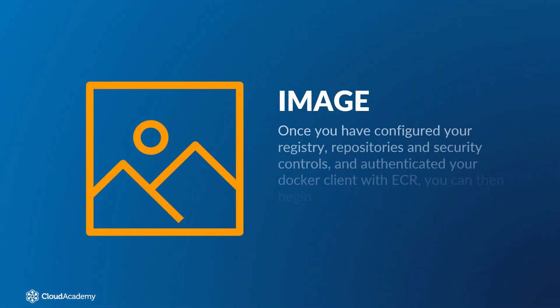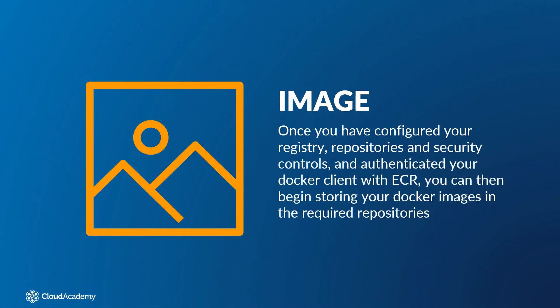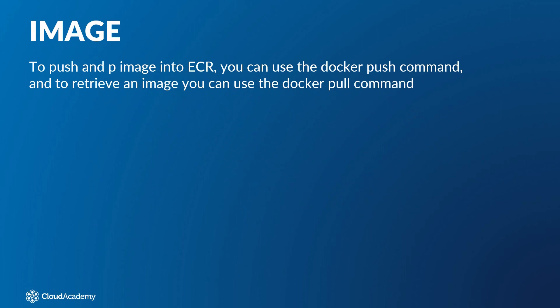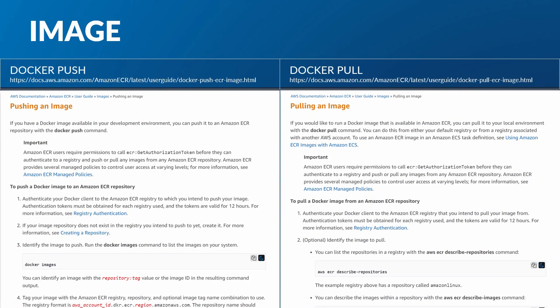Once you have configured your registry, repositories and security controls, and authenticated your Docker client with ECR, you can then begin storing your Docker images in the required repositories, ready to pull down again as and when required. To push an image into ECR you can use the docker push command, and to retrieve an image you can use the docker pull command. For more information on how to perform both a push and a pull of images, please see the following links.